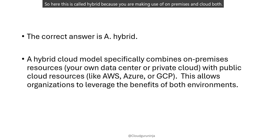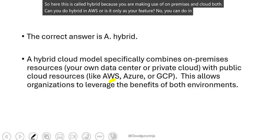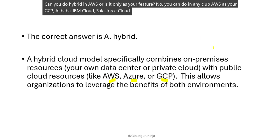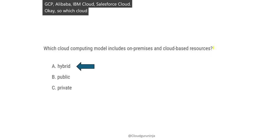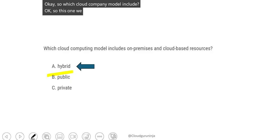Can you do hybrid in AWS, or is it only an Azure feature? No — you can do hybrid in any cloud: AWS, Azure, GCP, Alibaba, IBM Cloud, Salesforce Cloud. So the answer to which cloud computing model includes on-premises and cloud is confirmed: it is the hybrid model.